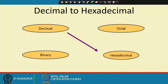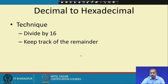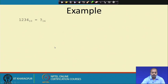Decimal to hexadecimal conversion. This is also similar in nature. Here we have to divide by 16, as you can understand by this time. This base conversion will involve dividing by 16 and keeping track of the remainder.